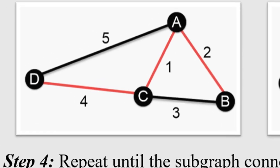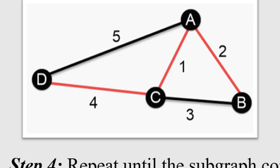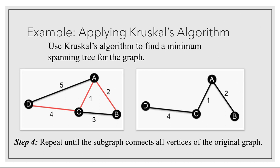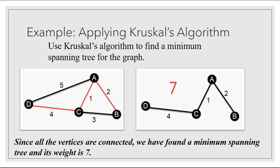Step four says to repeat until the subgraph connects all vertices of the original graph — which means we're done, because the edges we've selected already connect all of the vertices. On the right, I've pulled those edges out, and since all the vertices are connected and there are no circuits, it's a tree. We have found our minimum spanning tree, and its weight is four plus one plus two, which is seven.